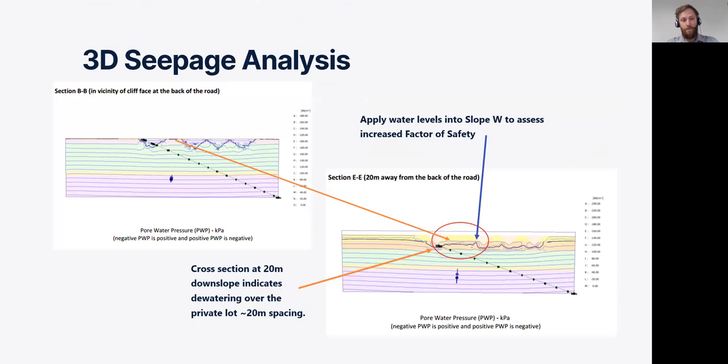Using the PLAXIS model, we were then able to start cutting slices through the slope to look at the groundwater level at specific locations. We were able to cut a section at the crest of the slope as shown in section BB, which shows little to no dewatering between the drains. And then we could cut a further section at 10 metre intervals. This section E here shows a section cut at 20 metres downslope where full dewatering almost occurs between the terrace drains over the private lot in the middle of the site.